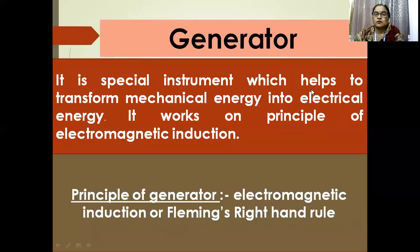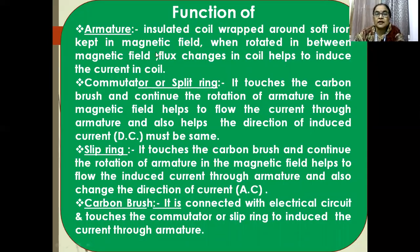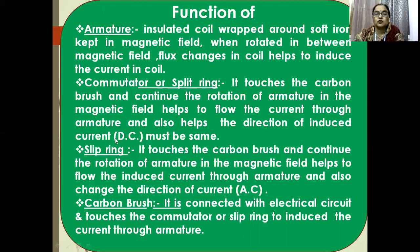A generator is a special instrument which helps to transform mechanical energy into electrical energy. It works on the principle of electromagnetic induction and Fleming's right-hand rule. The armature is an insulated coil wrapped around a soft iron core, kept in a magnetic field. When rotated in between the magnetic field, flux changes in the coil, which induces current. The split-ring commutator continues the rotation of the armature, helps flow the current, and ensures the direction of induced current remains the same, producing DC current.